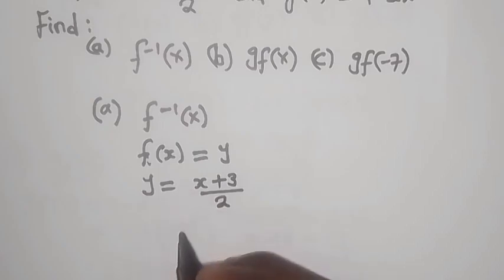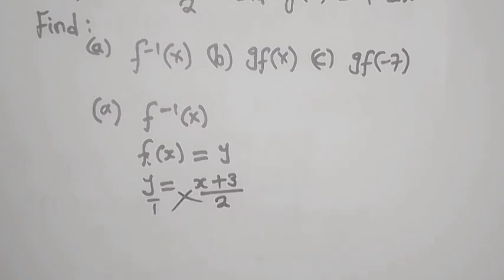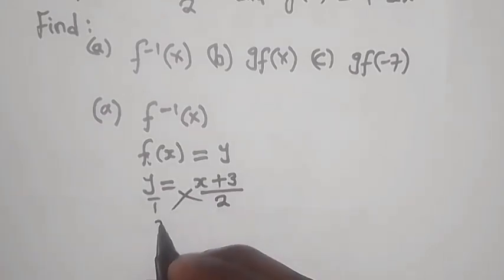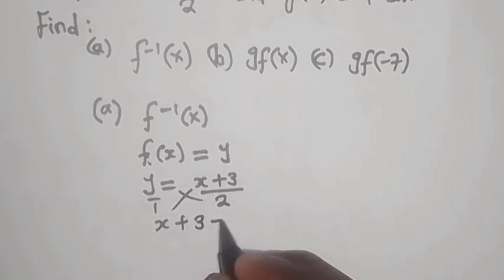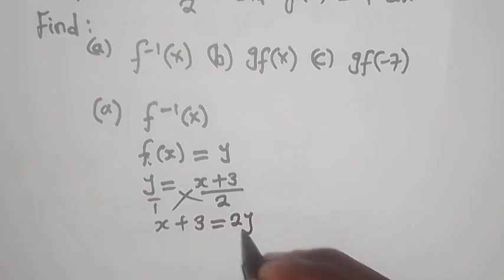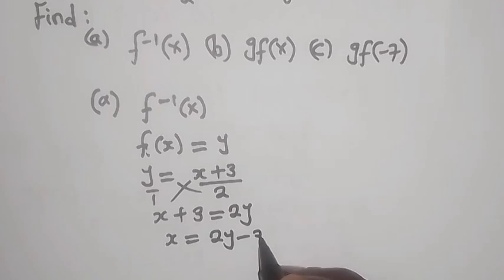And then now you make x the subject of the formula. So I'm going to put over 1 there and then cross multiply. So I'm going to say 1 times x, just x, plus 1 times 3, this is just 3, is equal to y times 2. This will just be 2y. And then from there, we isolate now x is equal to 2y minus 3.